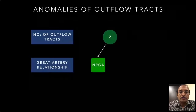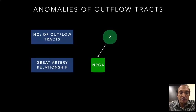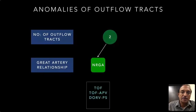If it is 2, look at the great artery relationship — whether they are normally related. Normally related means the pulmonary artery is anterior and the aorta is posterior. Two outflow tracts with normally related great arteries essentially indicates tetralogy of Fallot or one of its variants, which we will be discussing.